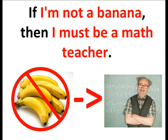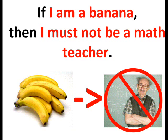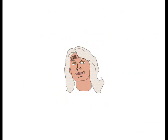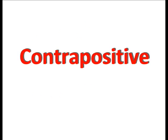The contrapositive just combines the rest of them — if not that, well then not this. If I'm not a banana, then I must be a math teacher. If I negate both of these, then that is my inverse. So if I am a banana, then I must not be a math teacher — which makes perfect sense if you think of it. A banana for a math teacher would be really freaky.